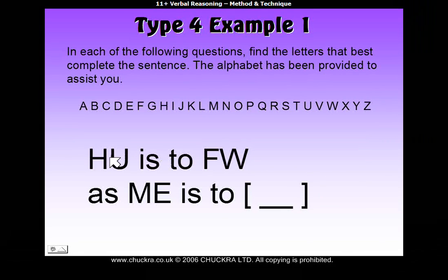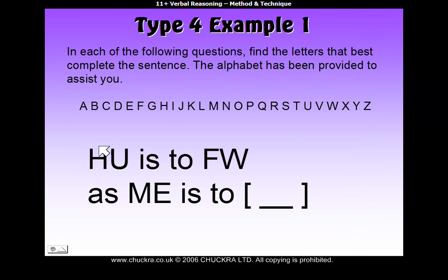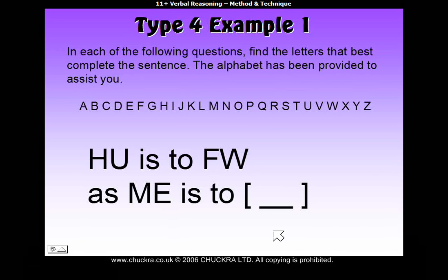So we have to figure out the relationship between HU and FW, basically how they get from HU to FW. And once we've worked out the rule or the way in which they do it, you then apply the same rule to ME to find the answer.